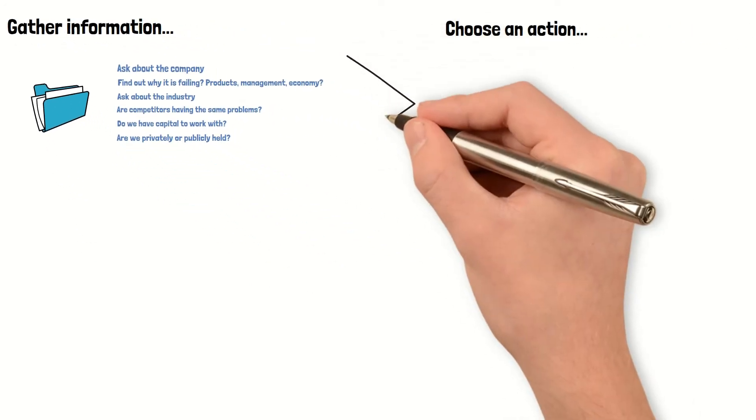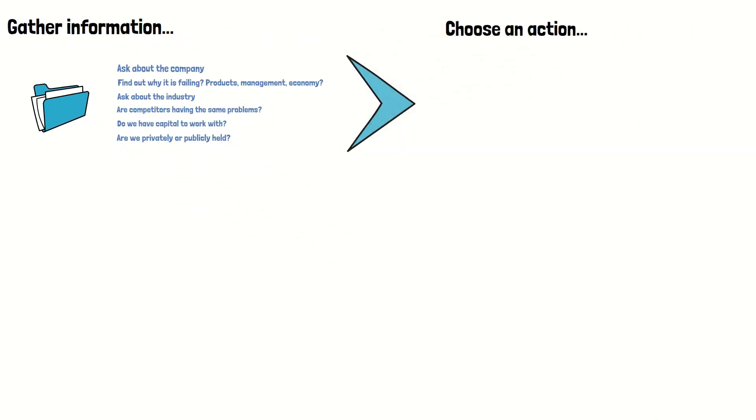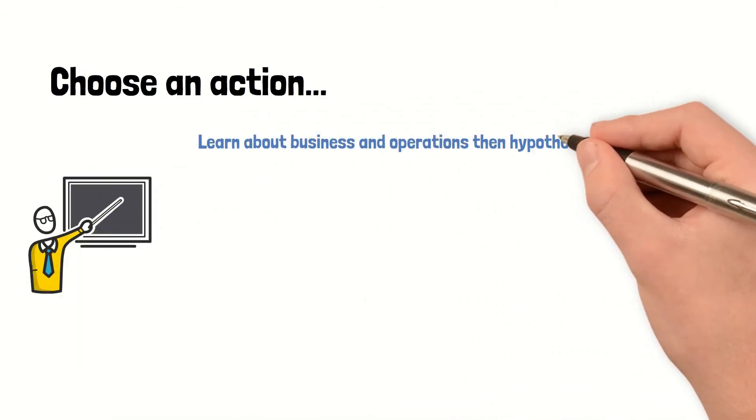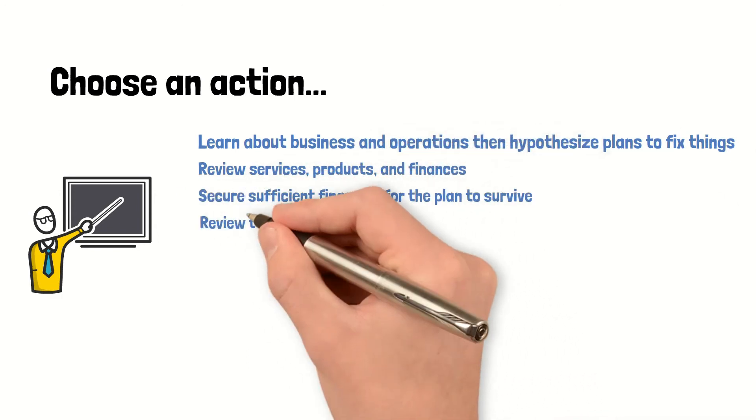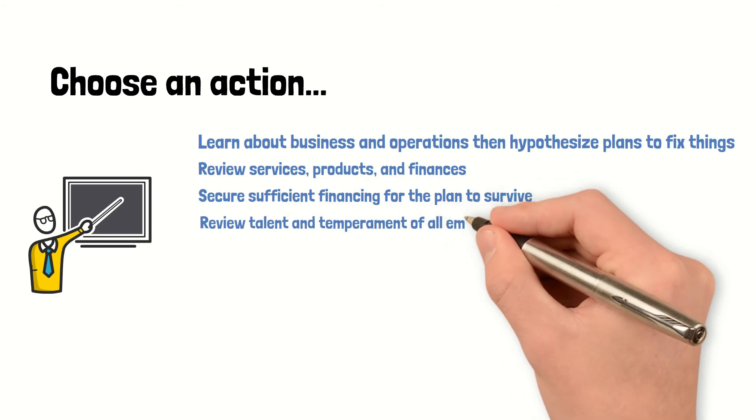Then choose an action-based approach. Learn about the business and its operations and hypothesize plans to fix things. Review all the services, products, and finances. Note how you would secure sufficient financing so the plan will make it. Review talent and temperament of all employees.